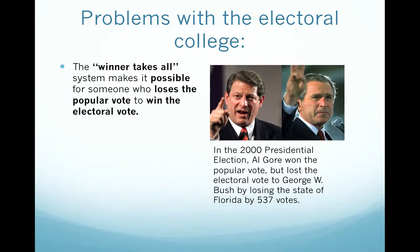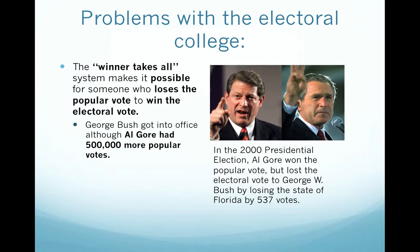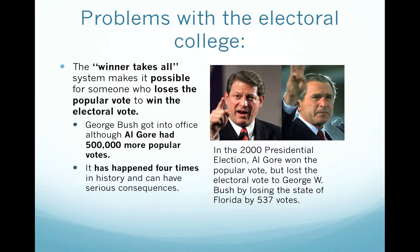The winner-take-all system makes it possible for someone who loses the popular vote to win the electoral vote. For instance, in the 2000 presidential election, Al Gore won the popular vote but lost the electoral vote to George W. Bush by losing the state of Florida by 537 votes. George Bush got into office, although Al Gore had 500,000 more popular votes. This has happened four times in our history and can have serious consequences.